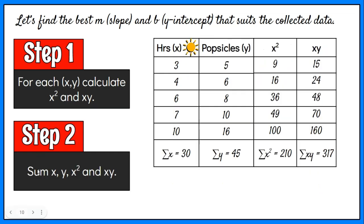Step 2: Sum x, y, x squared and xy. In this example, this row has the sum for every column.